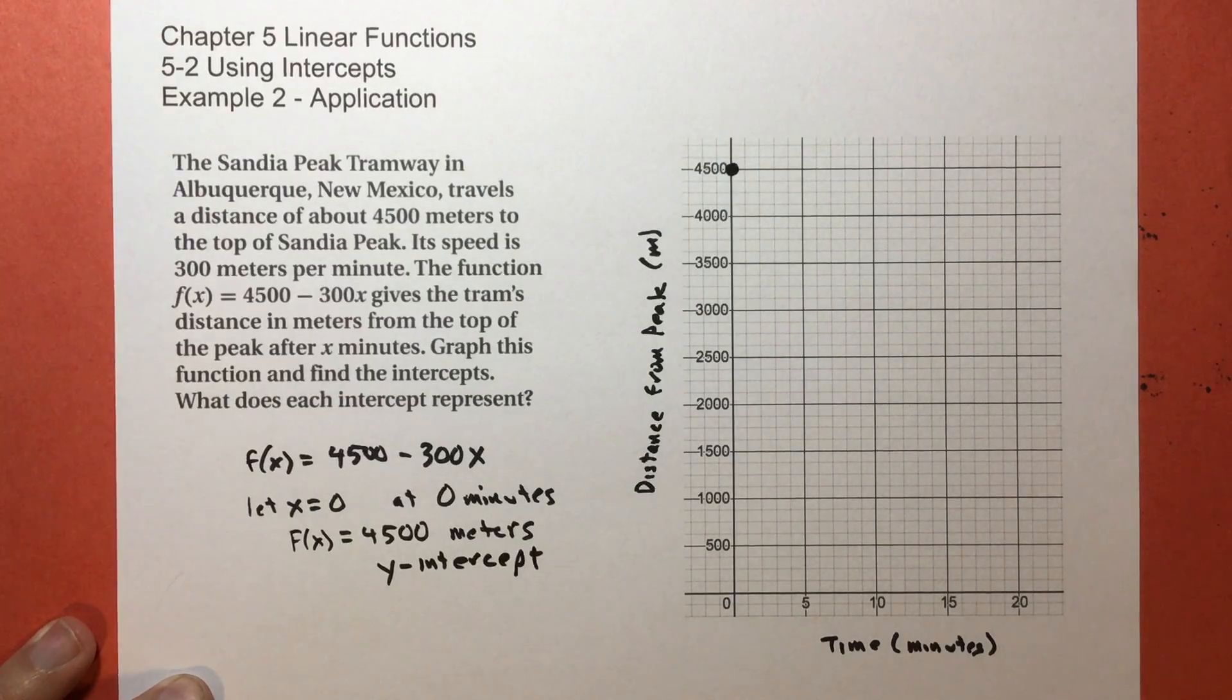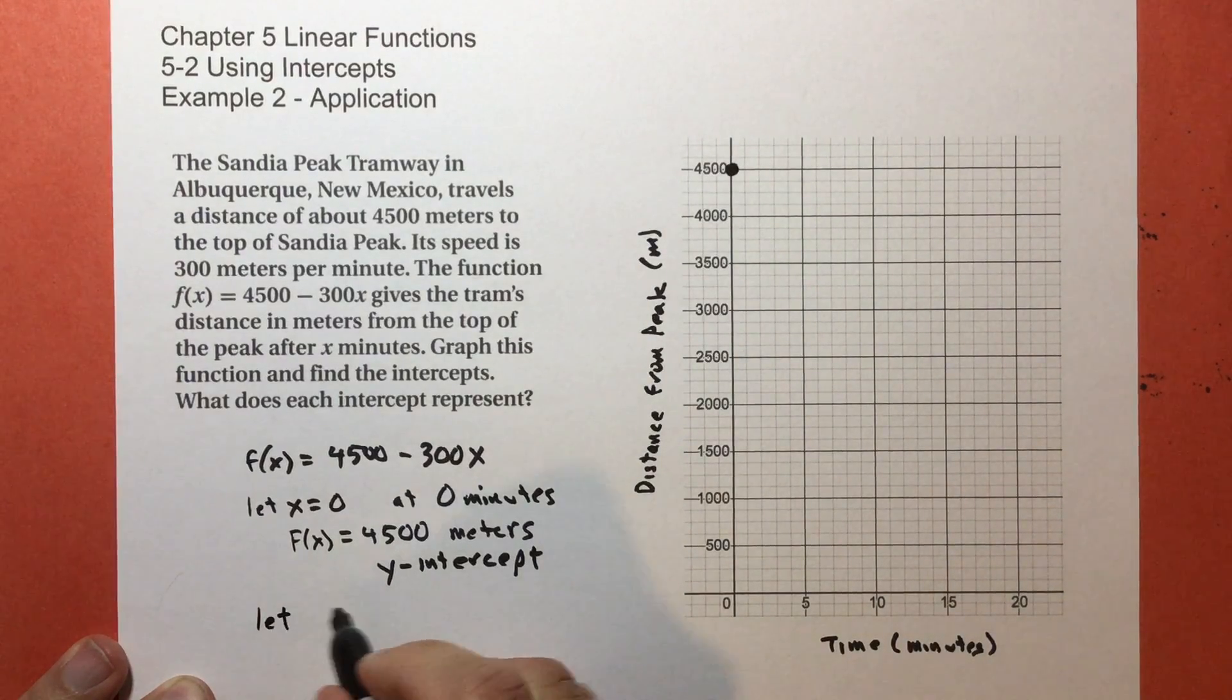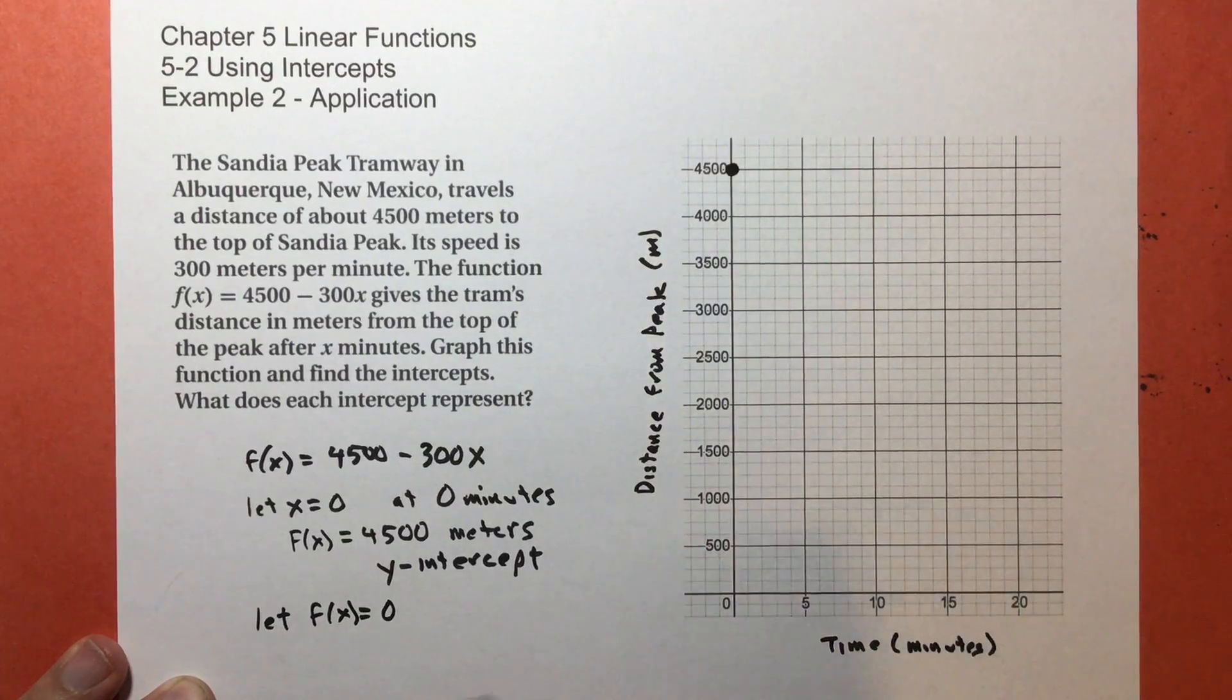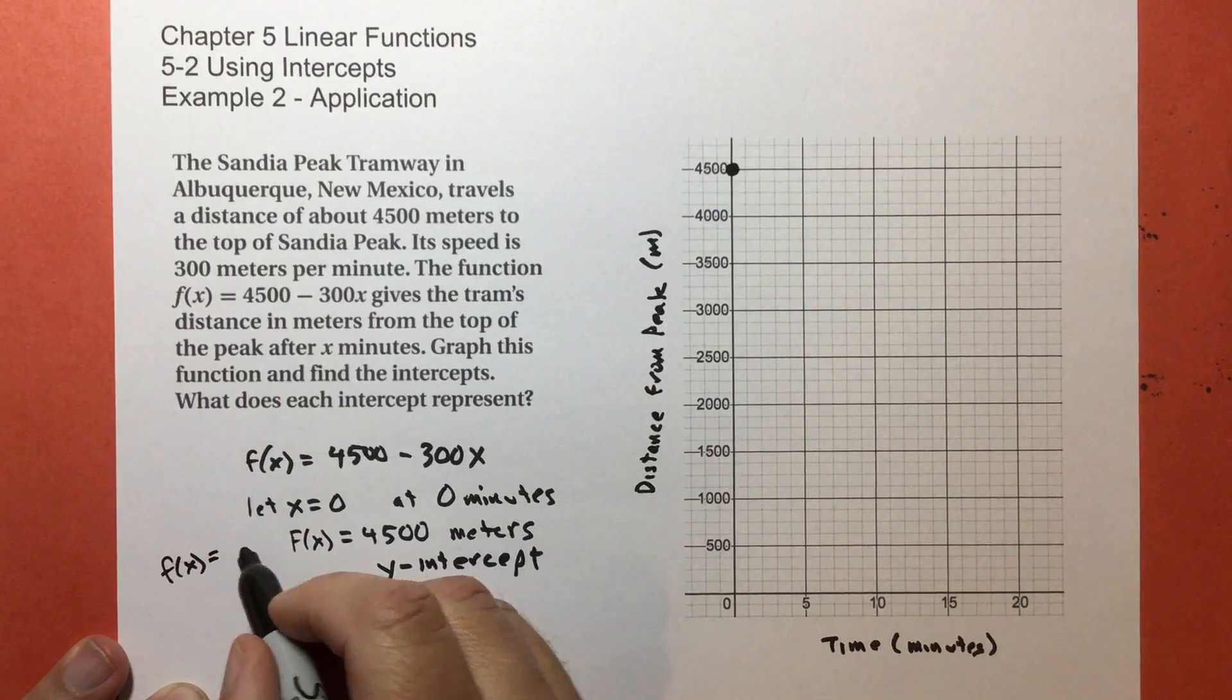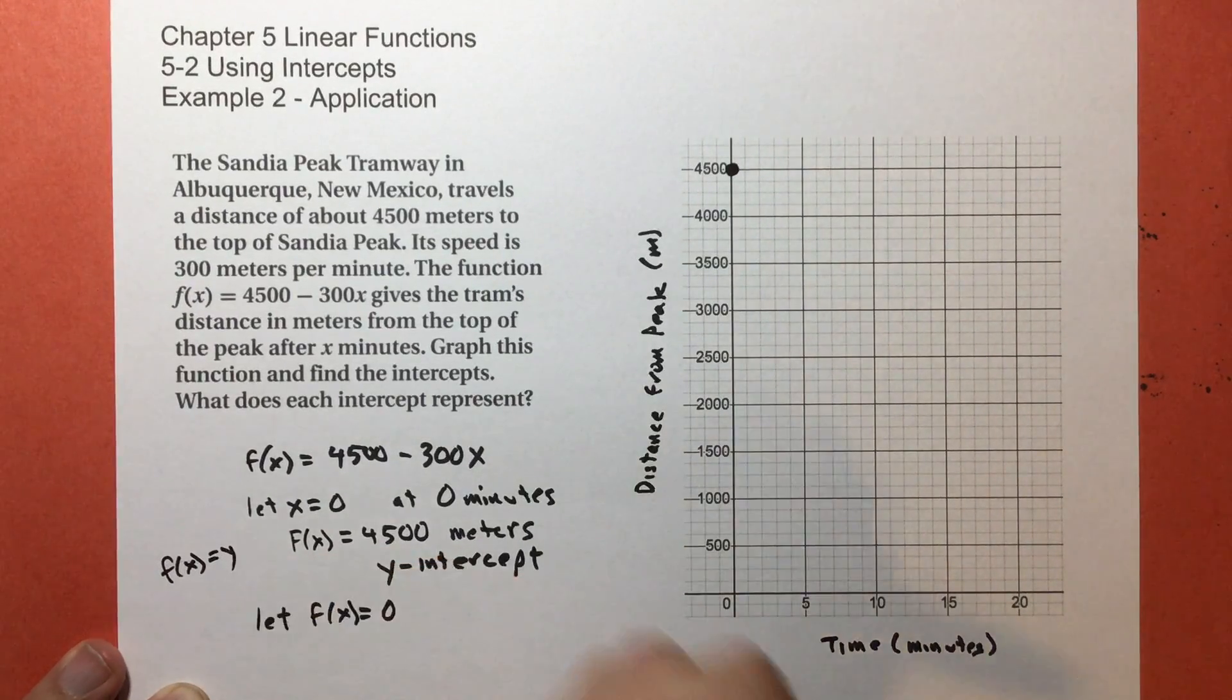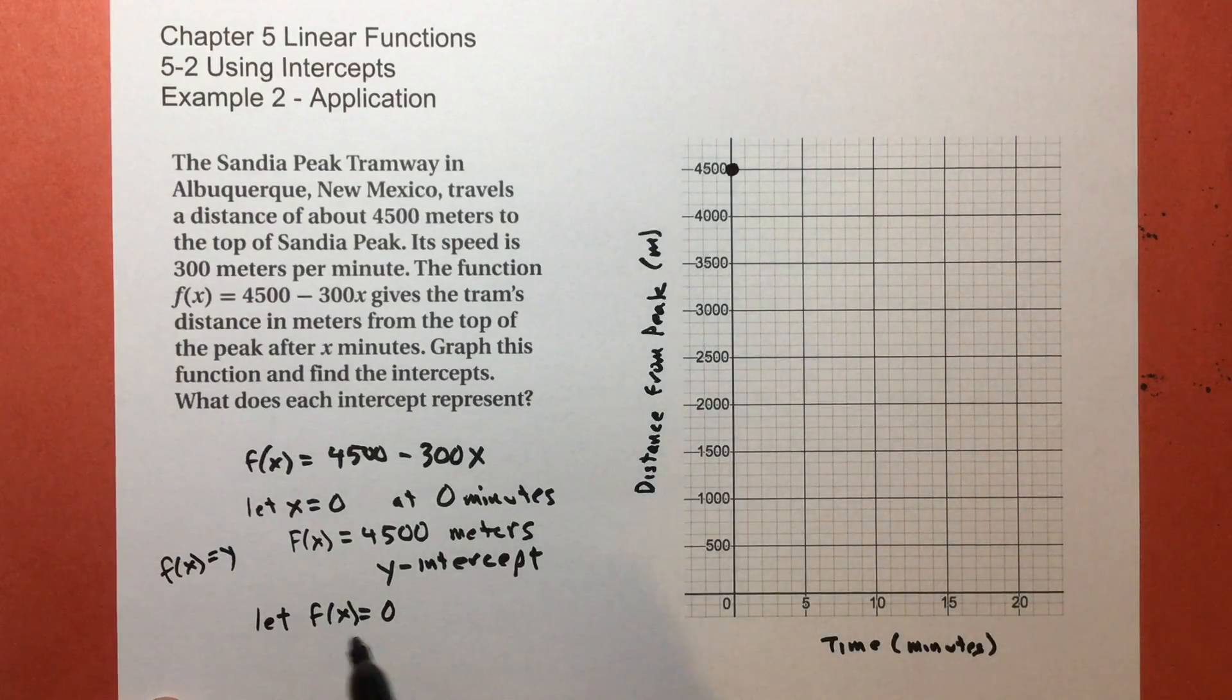All right, so now, when the ride is over, and the distance that you are from the top, because now you are at the top, is going to be zero. So I'm going to say let f of x equal zero. And by the way, f of x has a different meaning, but for our purposes, f of x and y can be interchangeable.